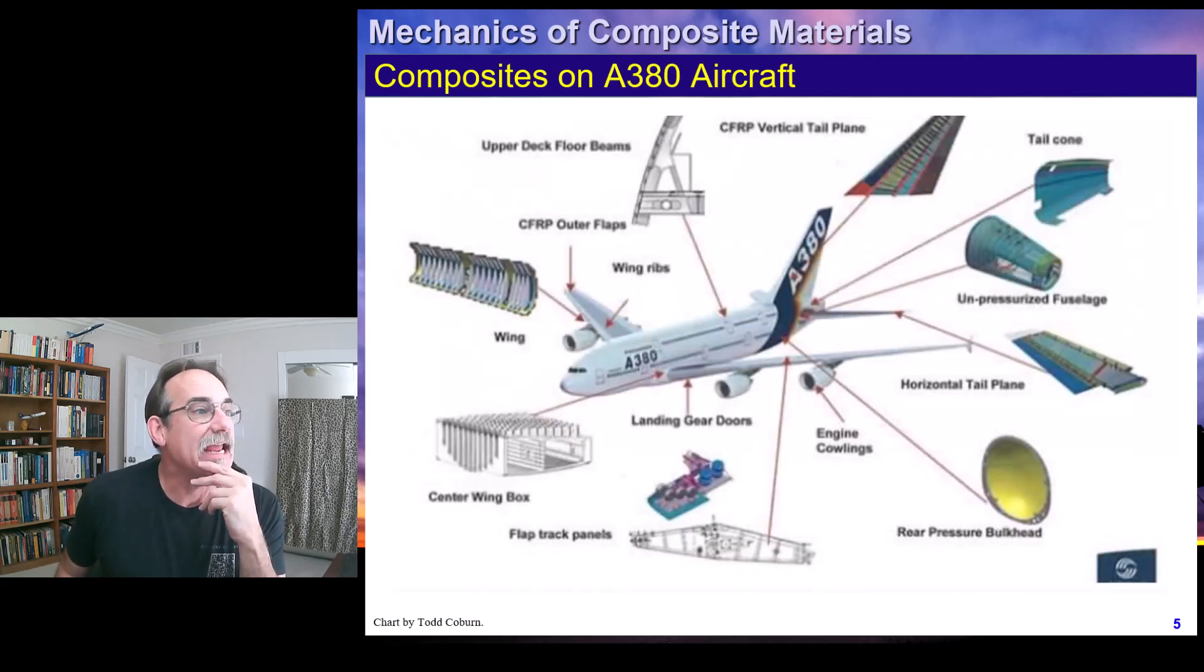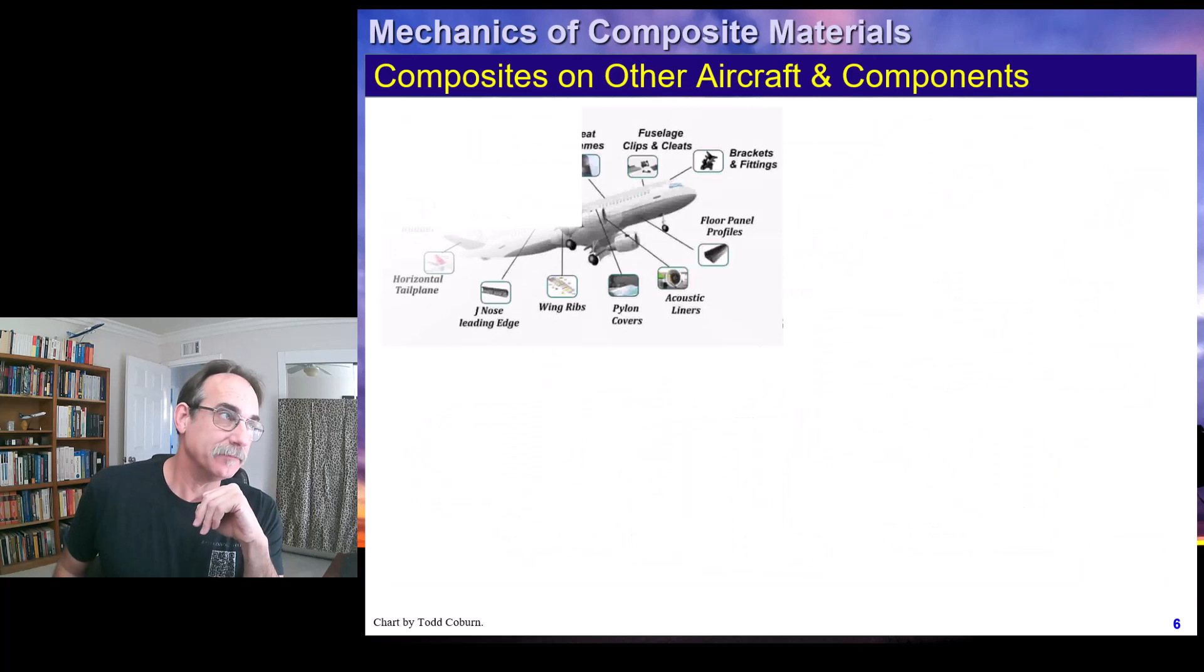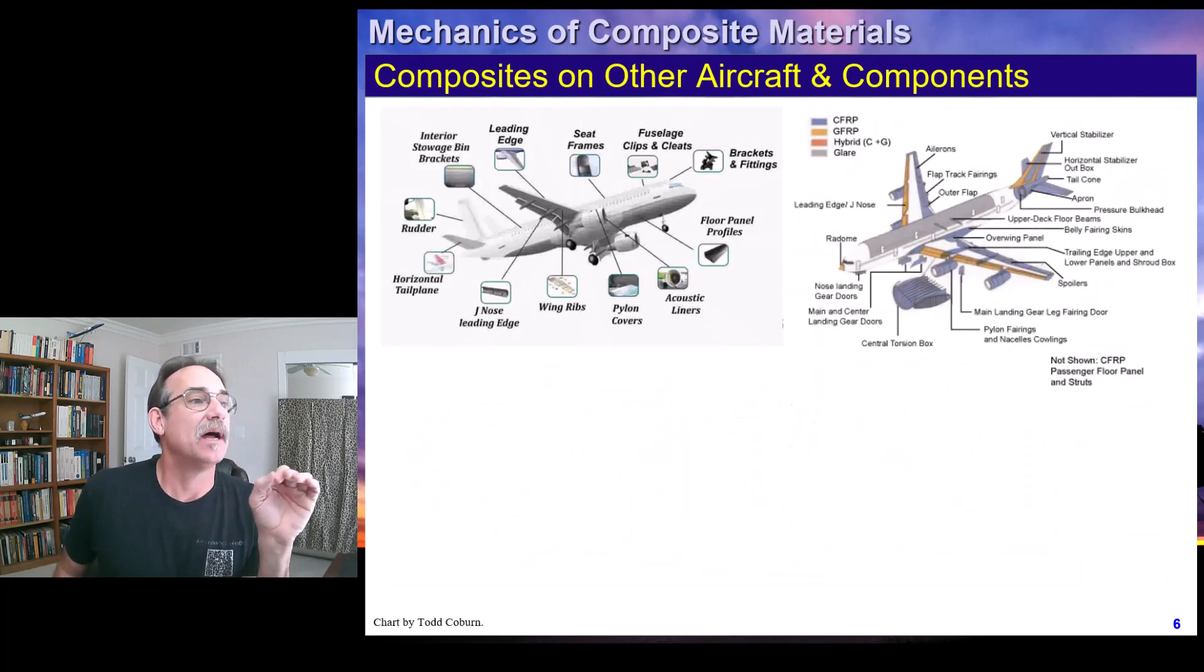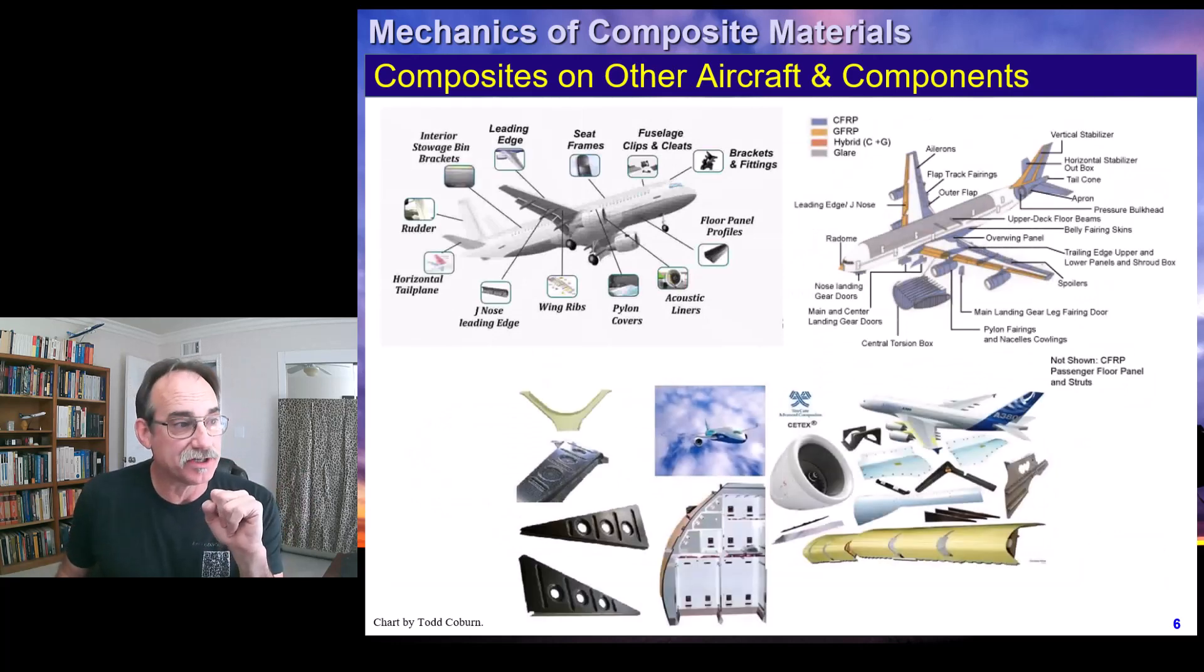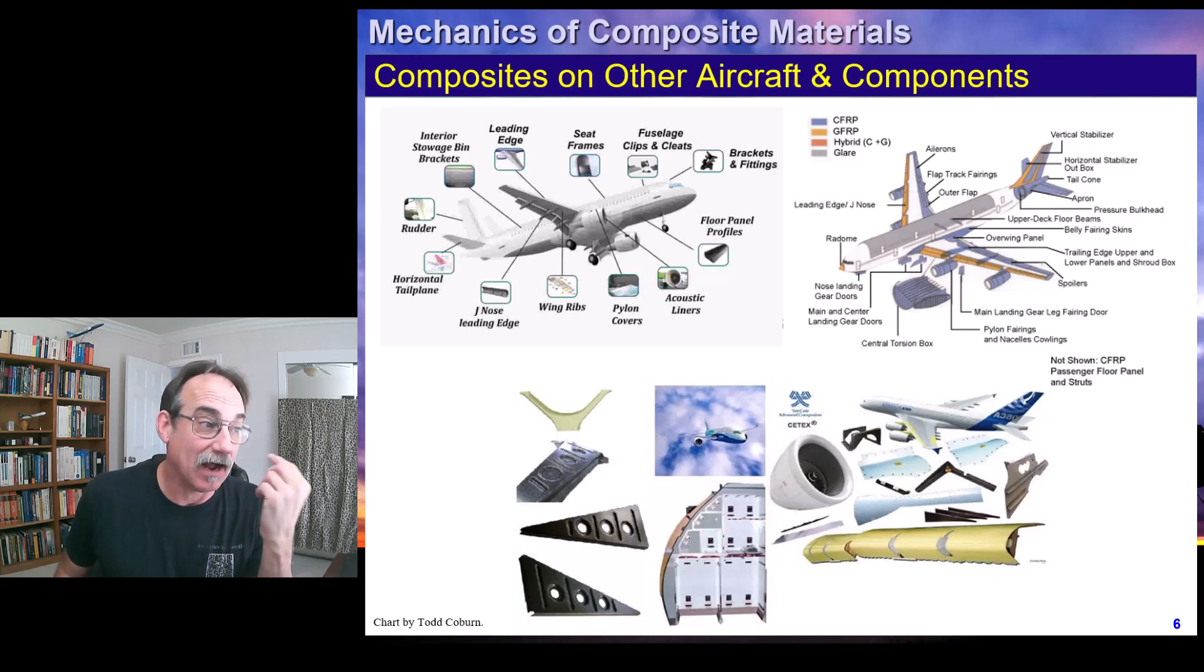This is the A380 and some of the parts on an A380 aircraft that are allegedly composite. Here's some little figures of composite use on other aircraft that are very common in interior structures.